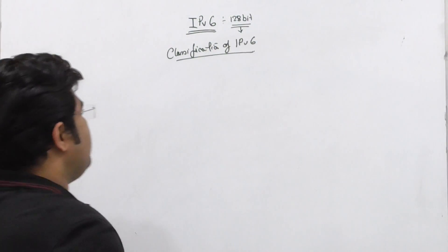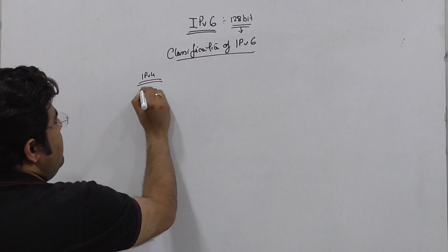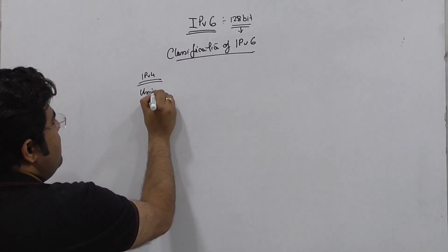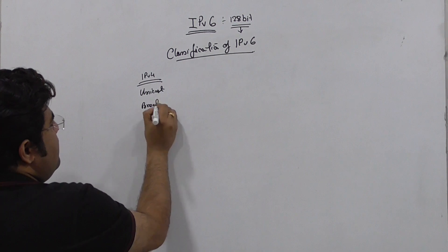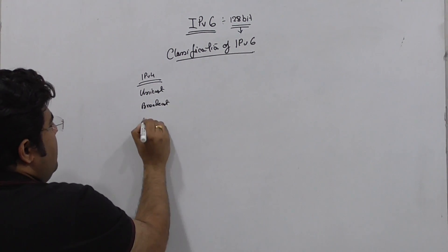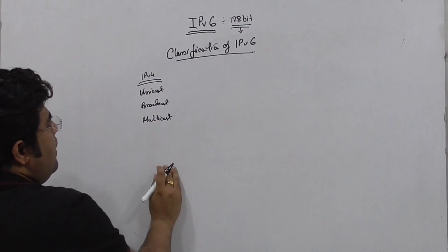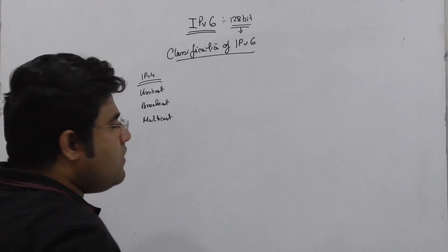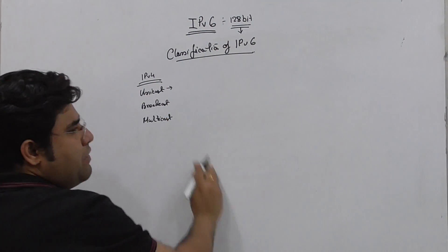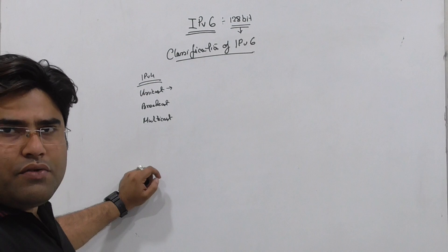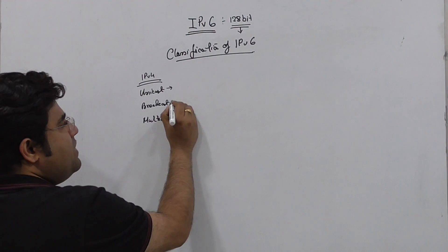What do we see in IPv4? In IPv4, we have a unicast IP, we have a broadcast, and we have a multicast. So in normal IPv4 we have unicast IPv4 and multicast IPv4.